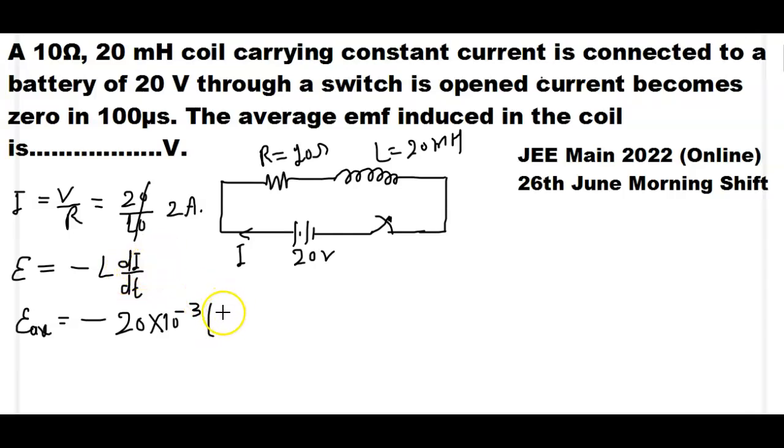Into di means change in current. Final current is 0 and initial current is 2 ampere. So change in current is 0 minus 2 divided by change in time. And change in time value is 100 microsecond, that means 100 into 10 to the power minus 6.